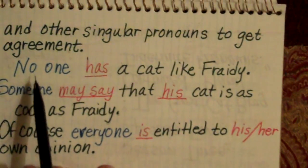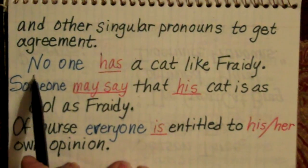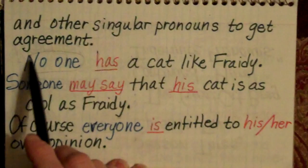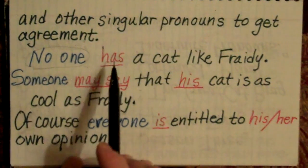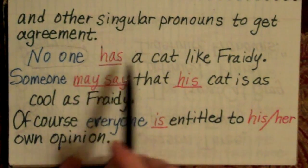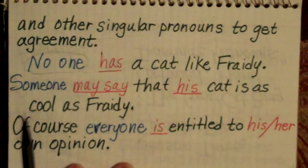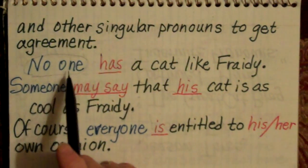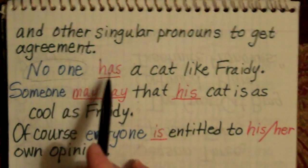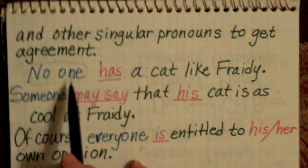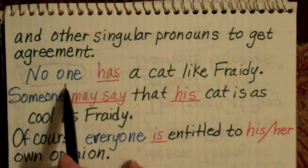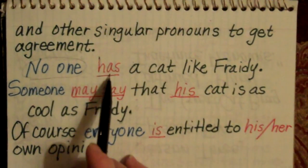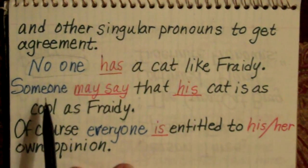Okay, here's an example. 'No one' — this is an indefinite singular pronoun — 'no one has a cat like Frady.' You don't say 'no one have,' because 'no one' is an indefinite pronoun that is singular, so it needs a singular verb.